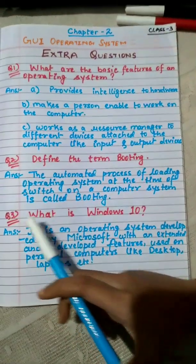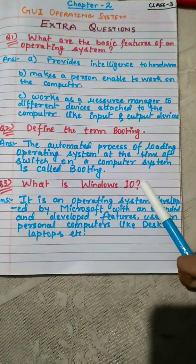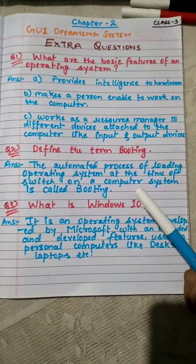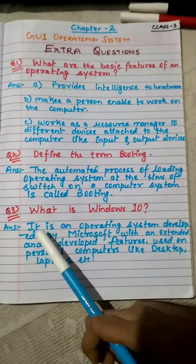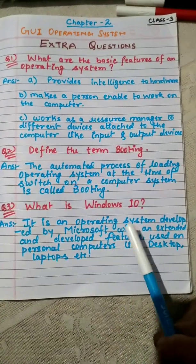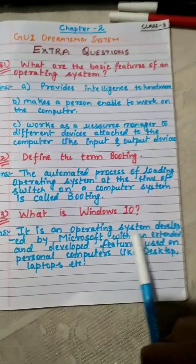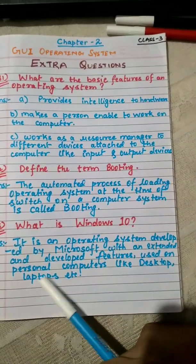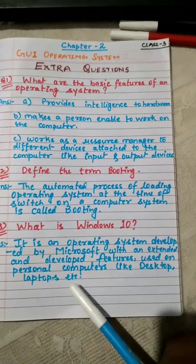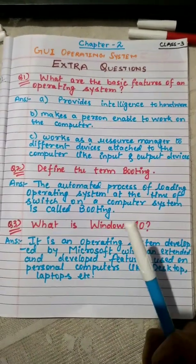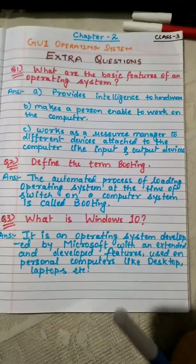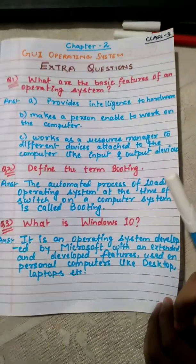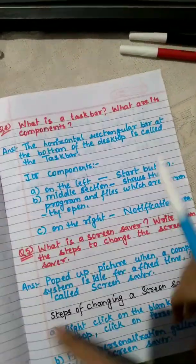Question number 3: What is Windows 10? I have already discussed in earlier classes, Windows is also an operating system. Windows 10 is an operating system developed by Microsoft with extended and developed features used on personal computers like desktops and laptops. Kids, Windows 10 is a very common operating system used in every type of desktop, laptops, and notebooks.